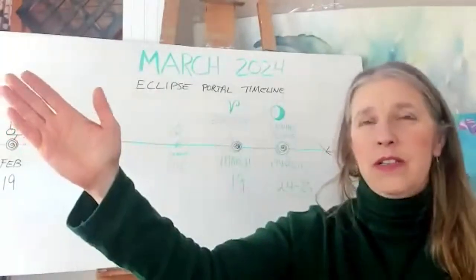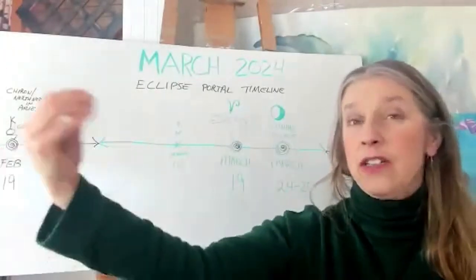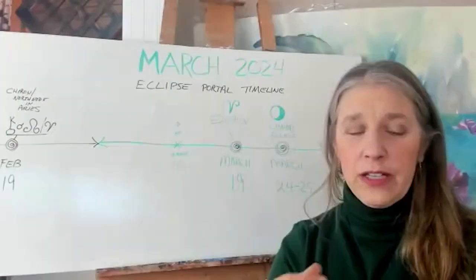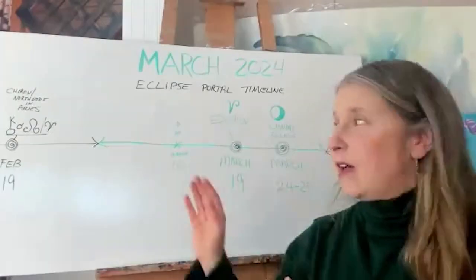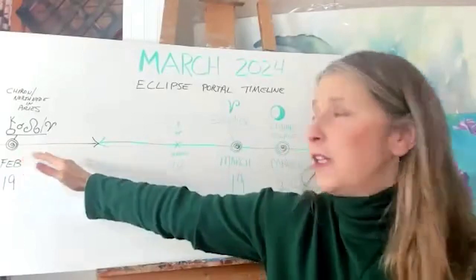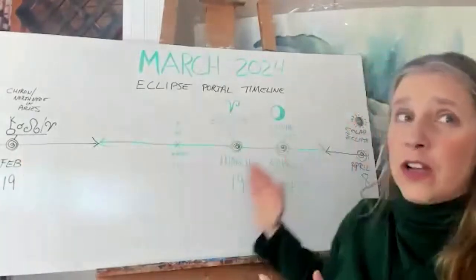North node represents the future, our destiny or our fate, and this event really is going to be influencing this entire window of time.